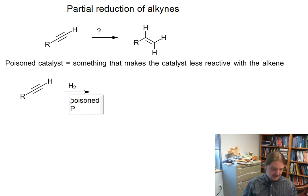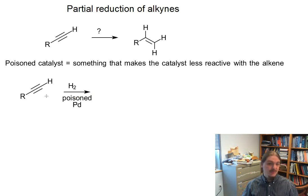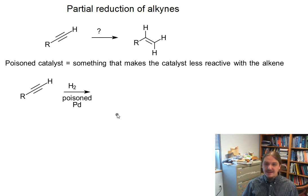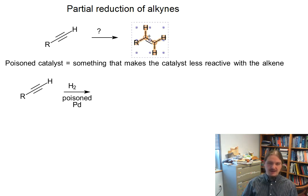Using poisoned platinum as our example here — and again, in the next video in this sequence, I will talk about the different poisoned catalysts and how they work — poisoned catalysts are one way of producing the alkene instead of the alkane.